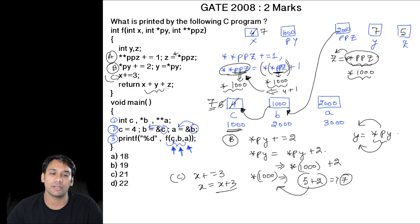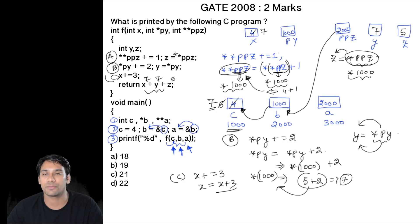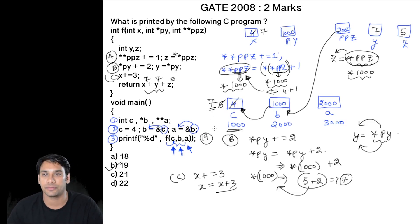Now in the return statement, we are returning x + y + z. The value of x is 7, the value of y is 7, and the value of z is 5. Therefore 7 + 7 = 14, and 14 + 5 = 19. This function is going to return 19, so this printf statement is going to print 19, and option b is correct.